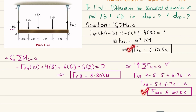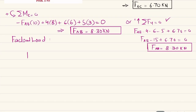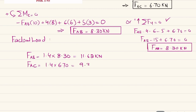Since these are factored loads, we apply the dead load factor of 1.4. The factored load for rod AB: 1.4 × 8.30 = 11.62 kN. Similarly, the factored load for rod AC: 1.4 × 6.70 = 9.38 kN.